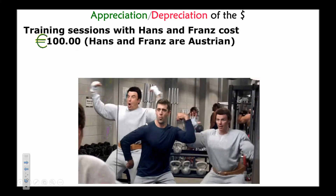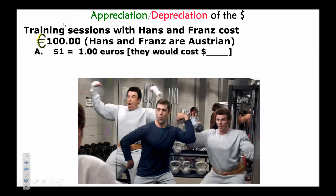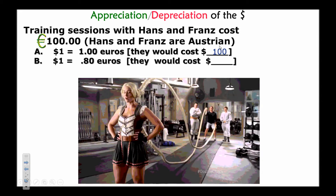Here's an example of why this matters. Hans and Franz are Austrian, so training sessions with them cost 100 euros. When one dollar buys one euro, you need one hundred dollars to pay for those sessions. But what if a dollar will now only buy 0.80 euros? Would it cost more or less to get lessons from Hans and Franz?